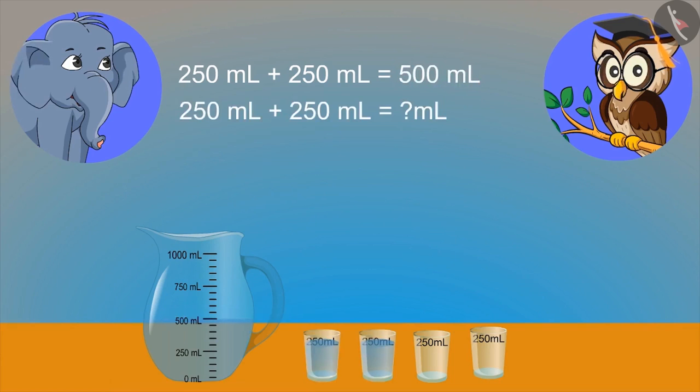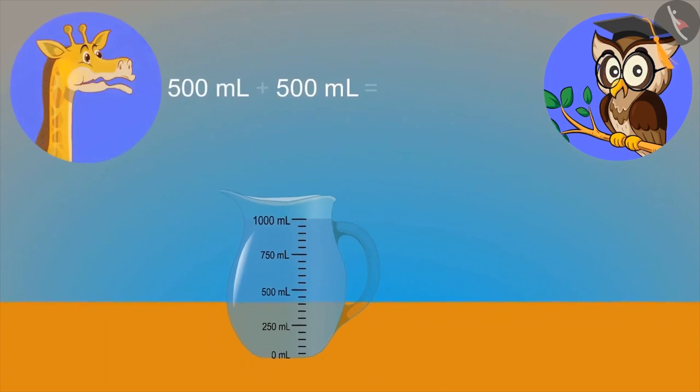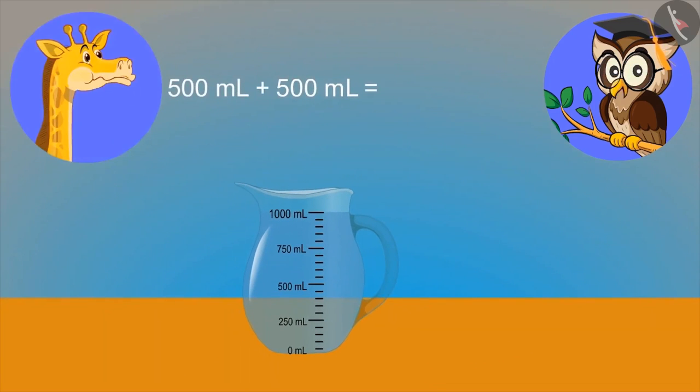If we combine two more glasses of 500 ml water in it, then how much total water will we have? 500 ml and 500 ml means 1,000 ml, means 1 liter.